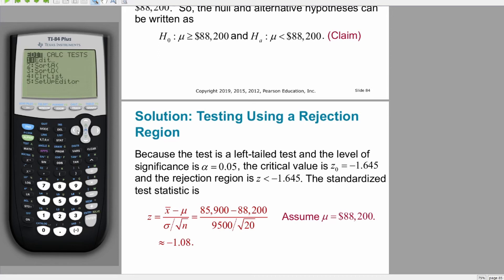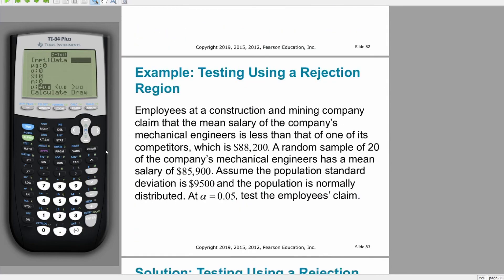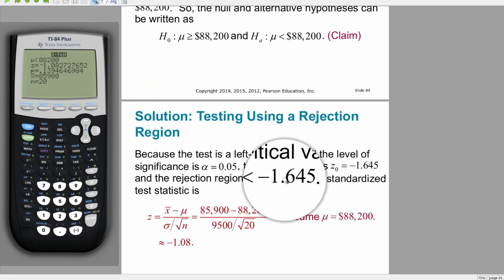Now we run the test using stats, with a supposed mean of 88,200, a standard deviation of 9,500, x-bar of 85,900, and a sample size of 20, running a left-tailed test. We can see the p-value is too large, or alternatively, the z-score we get — negative 1.08 — is bigger than the critical z-score we got from the critical region.